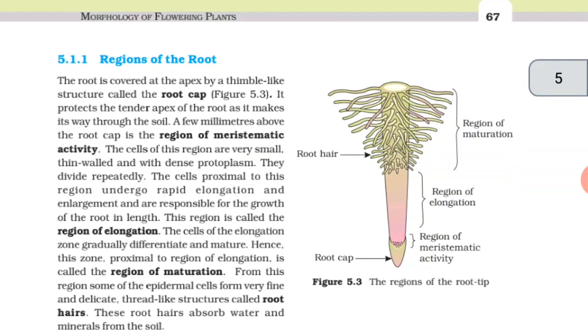Regions of the root. The root is covered at the apex by a thimble-like structure called the root cap. It protects the tender apex of the root as it makes its way through the soil. A few millimeters above the root cap is the region of meristematic activity. The cells of this region are very small, thin-walled, and with dense protoplasm. They divide repeatedly. The cells proximal to this region undergo rapid elongation and enlargement and are responsible for the growth of the root in length. This region is called the region of elongation.